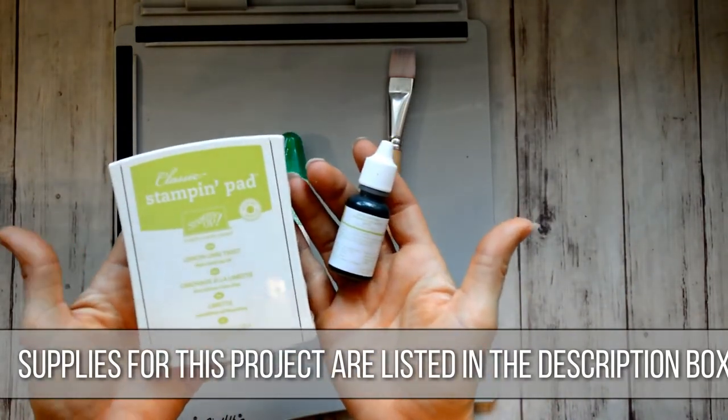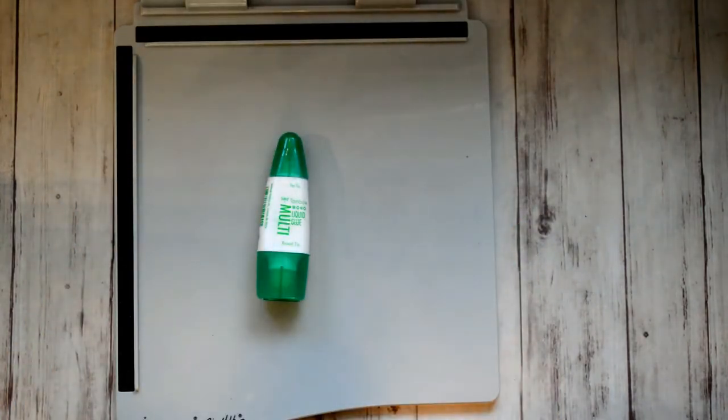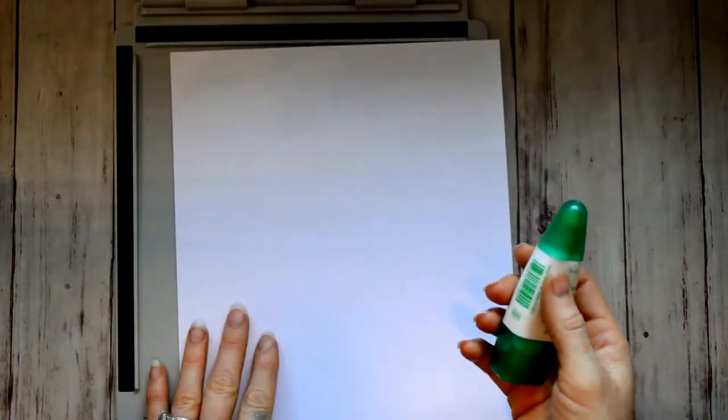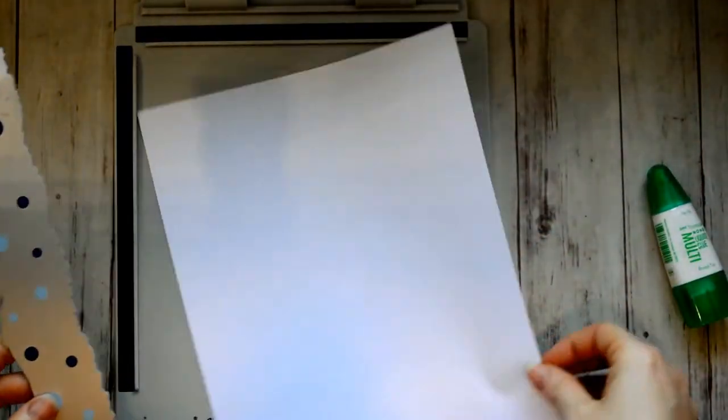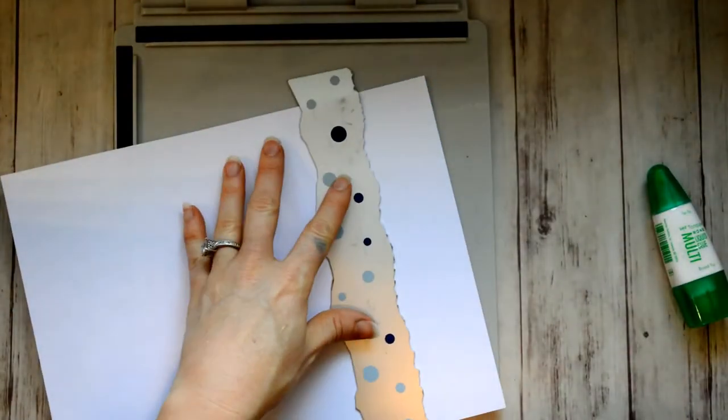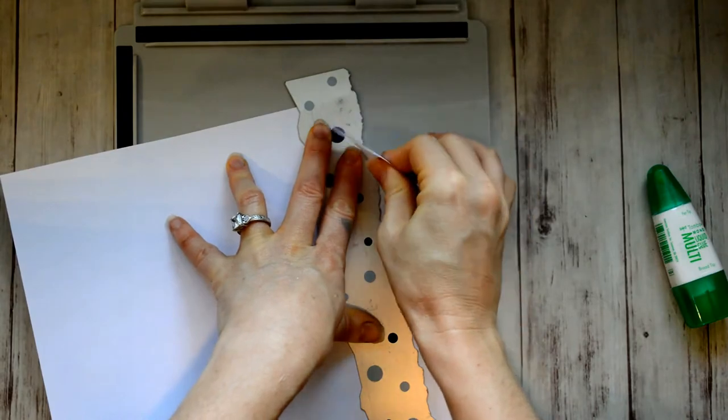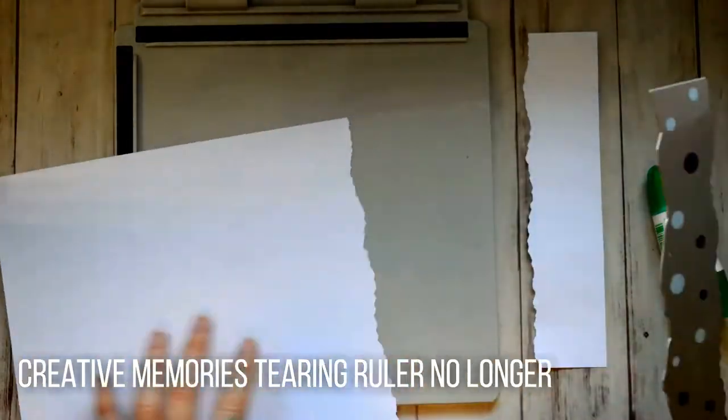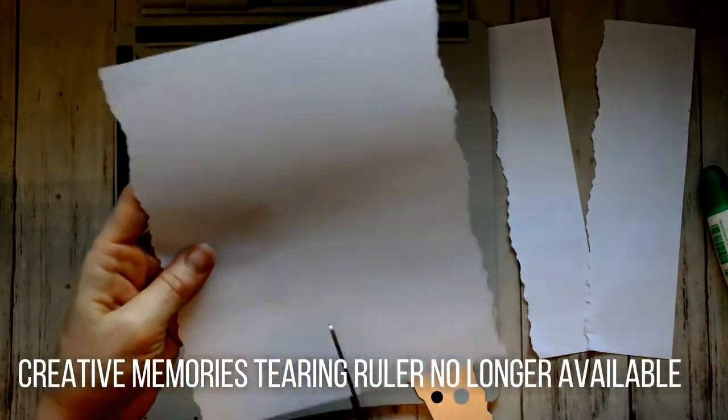I'm going to use Lemon Lime Twist, and you can use your ink pad if you don't have a re-inker, and you can also use your favorite color. Now first, I wanted to get a kind of an uneven border around the card. This only took me five minutes to do, so it looks a little complicated, but it's really simple.